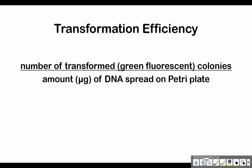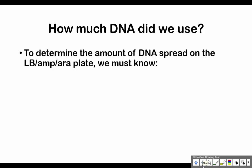For transformation efficiency, what we mean is the number of transformed colonies. The transformed ones will be the green fluorescent, green glowing colonies of bacteria — the number of those per the amount of DNA that we spread on the petri plate. We're going to measure the amount of DNA in micrograms.